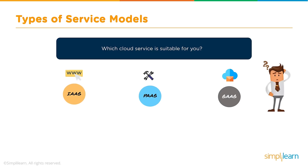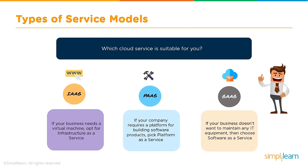Now at this moment you might be thinking: I thought you were done categorizing the cloud — now you're going to talk about three more categories? Which one should I pick? Well, let me explain. If all that you want is just a VM and you have the expertise to install the software on top of it and make it work, then go for IaaS. If you only want a platform or an interface to program or upload a program and make it run, then pick PaaS.